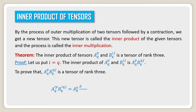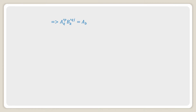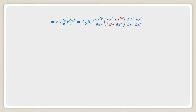Now a'_pq times b'_qjk is equal to a_ab times (del x'_p / del x_a) times (del x_b / del x'_q) times b_rst times (del x'_q / del x_r) times (del x'_j / del x_s) times (del x_t / del x'_k). This implies a'_pq times b'_qjk equals a_ab times b_rst times (del x'_p / del x_a).